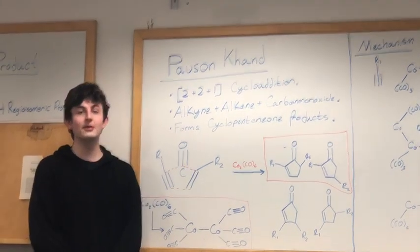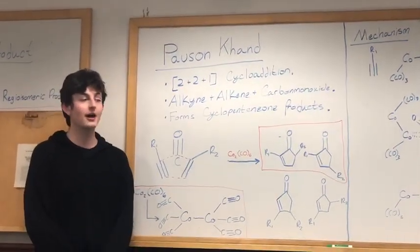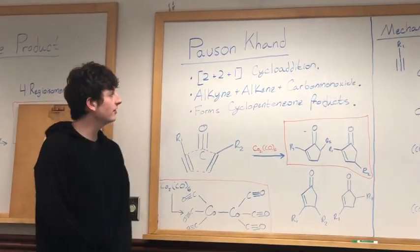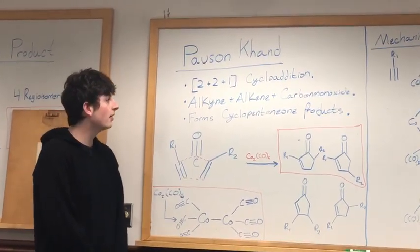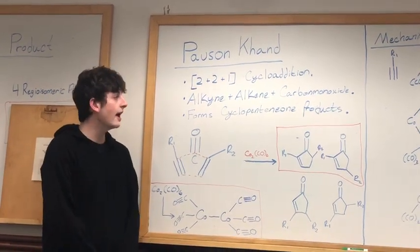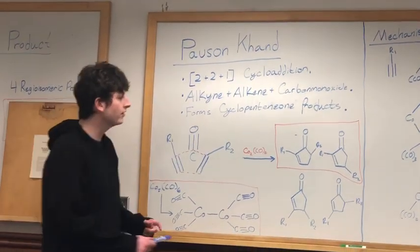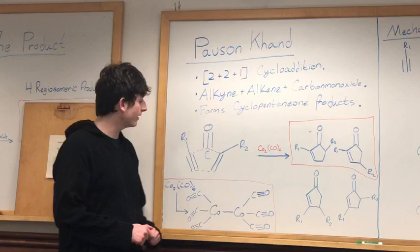Hey, my name is Christopher LaCour, and today I'll be telling you a little bit about the Pauson-Khand reaction. So the Pauson-Khand is going to be a 2+2+1 cycloaddition of an alkyne, an alkene, and a carbon monoxide. Now these are going to form cyclopentenone products.